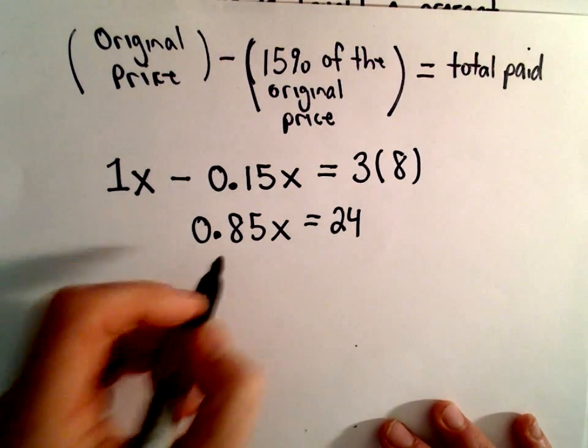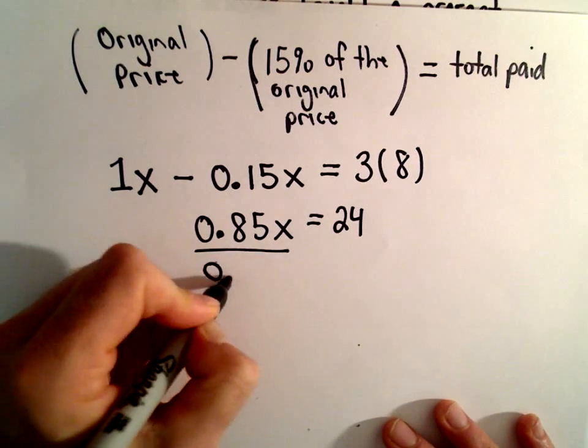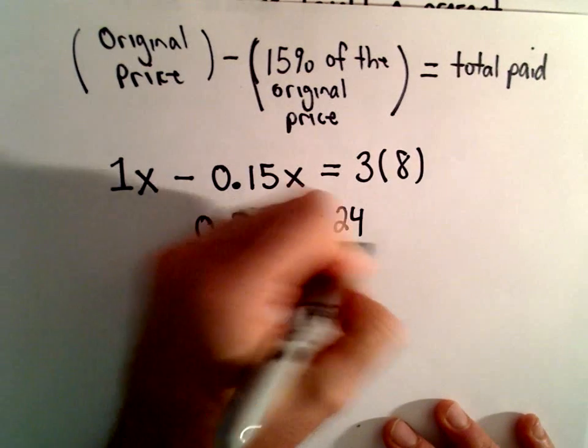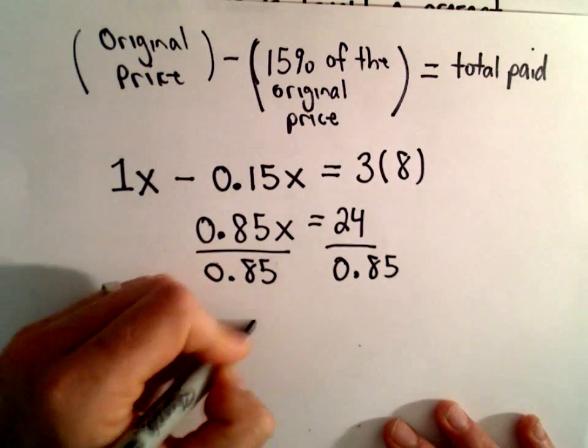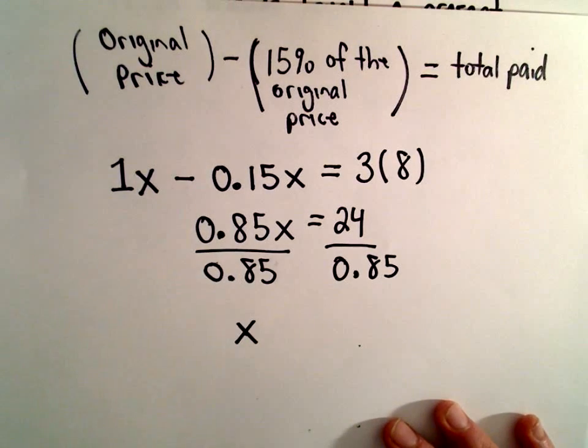And now to get the X by itself, we can divide both sides by 0.85. We're left with X on the left side.